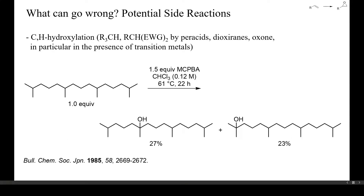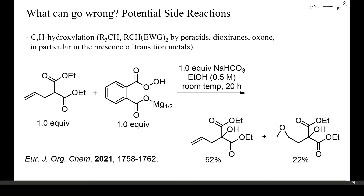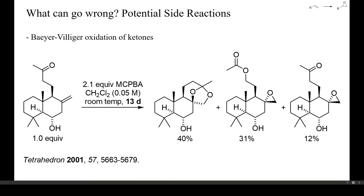Another potential side reaction is the oxidative hydroxylation of tertiary C–H groups, as in this example. Many of the typical epoxidizing reagents can bring about such hydroxylations, sometimes under surprisingly mild conditions. Traces of transition metals often catalyze these oxidations, but as shown here, are not strictly required. Highly enolized ketones or carboxylic acid derivatives can also be alpha-hydroxylated by intermediate formation of a hydroxy epoxide — in this example, this hydroxylation was faster than the epoxidation of an allyl group. Upon treatment with peroxy acids, ketones can be converted into carboxylic esters via the Baeyer-Villiger reaction, which can sometimes be catalyzed by Brønsted or Lewis acids.